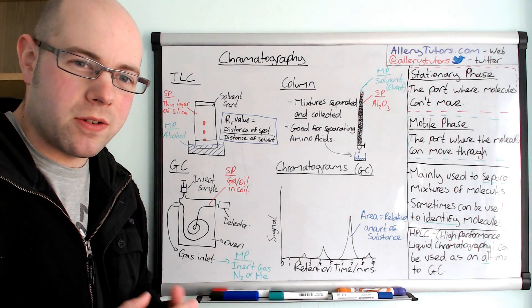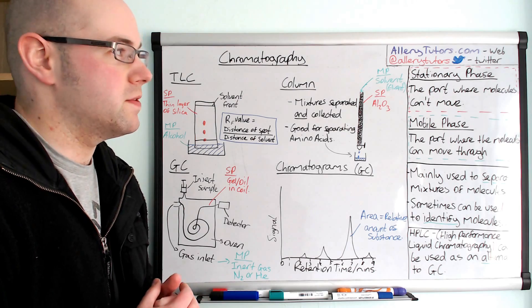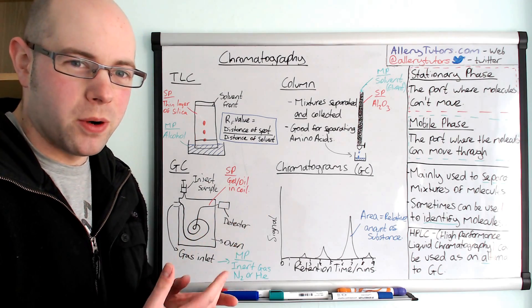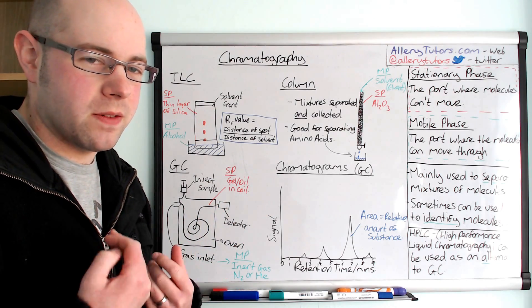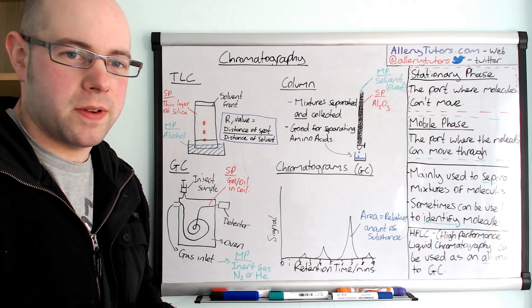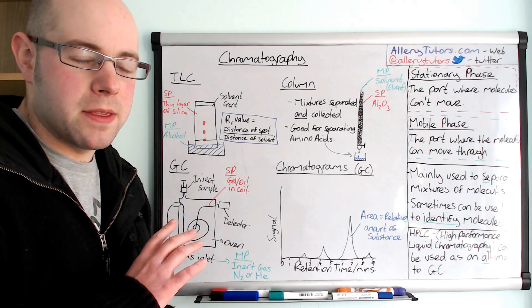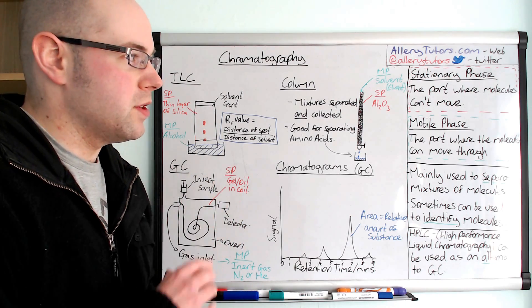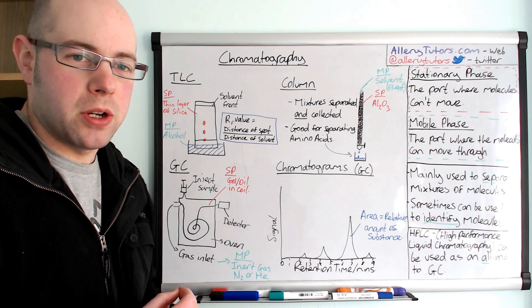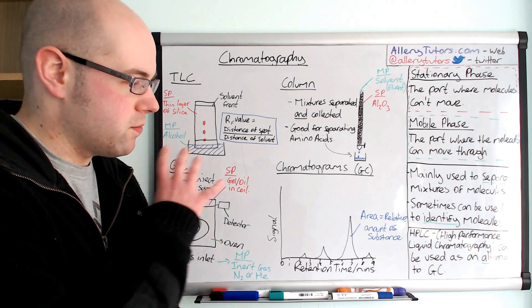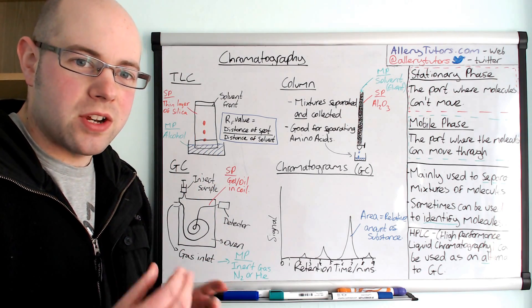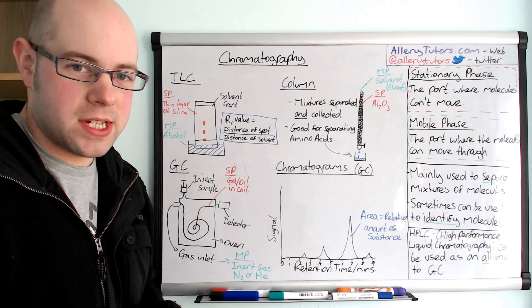In chromatography you need to know the difference between the two and it's pretty straightforward. The word stationary means obviously not to move, so this is the part of the chromatography where the molecules don't move through it. The mobile phase is where the molecules do move through it. For each type we're going to go through and explain what the stationary and mobile phase is.